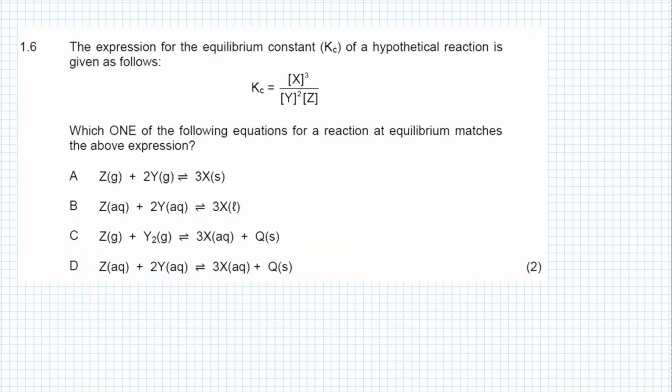Question 1.6 is the last question we will look at in this video. It says the expression for the equilibrium constant Kc of a hypothetical reaction is given as follows: Kc = [X]²[Y]² / [Z]. Which one of the following equations for a reaction at equilibrium matches the above expression?